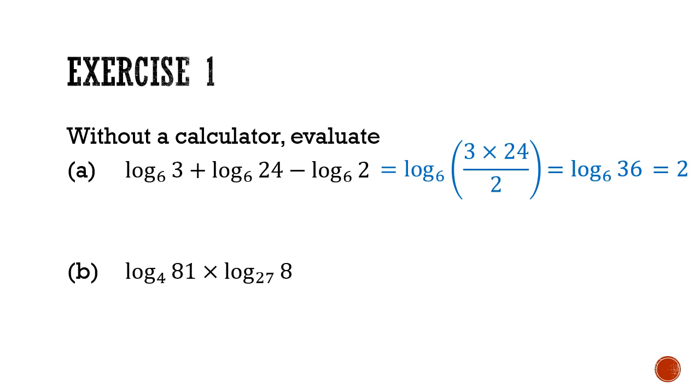In part b, this looks quite complicated because they have different bases and you're multiplying them together. So the trick here is we'll apply the change of base law. And we could pick any base. I'll just pick the natural log. So we'll take ln of 81 divided by ln of 4 multiplied by ln of 8 over ln of 27. So we can simplify this. This will give me ln of 3 to the power of 4 divided by ln to the power of 2 squared times ln to the power of 2 cubed divided by ln to the power of 3 cubed.